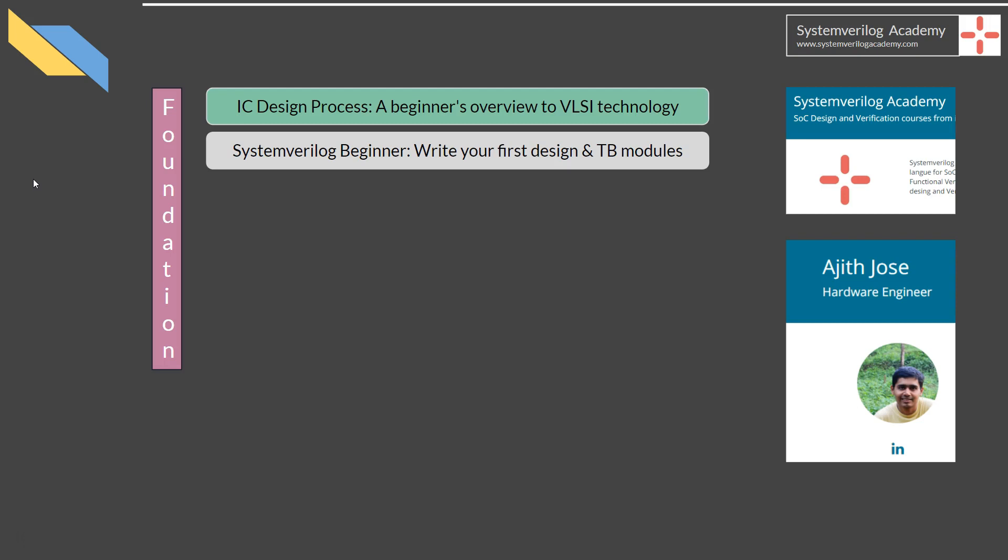Before learning SystemVerilog, it is good to have an overall picture of the VLSI industry, so that you can learn it more confidently by knowing how the final IC is made just with some lines of code in SV. This is taught in the course titled IC Design Process: A Beginner's Overview to VLSI Technology, which is a short, 30-minute, free course by SystemVerilog Academy.